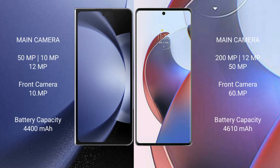Samsung Galaxy Z Fold 6 features a triple camera setup: 50 megapixel plus 12 megapixel plus 10 megapixel rear cameras, and a 29 megapixel front camera. Motorola AX 30 Ultra features a triple camera setup: 200 megapixel plus 12 megapixel plus 50 megapixel rear cameras, and a 60 megapixel front camera.